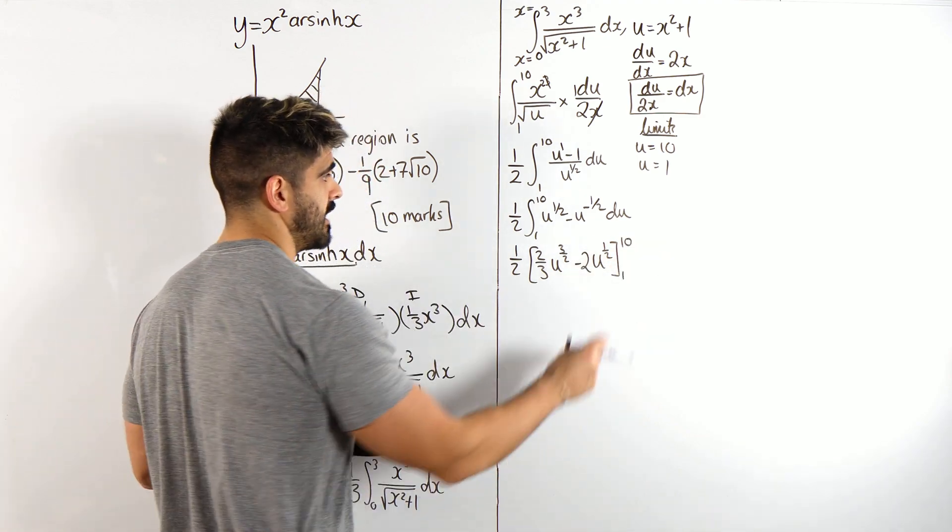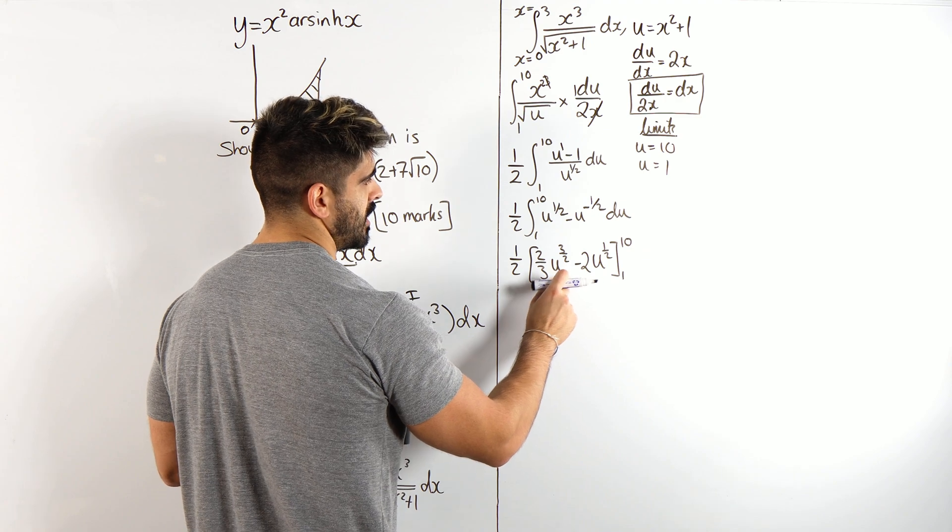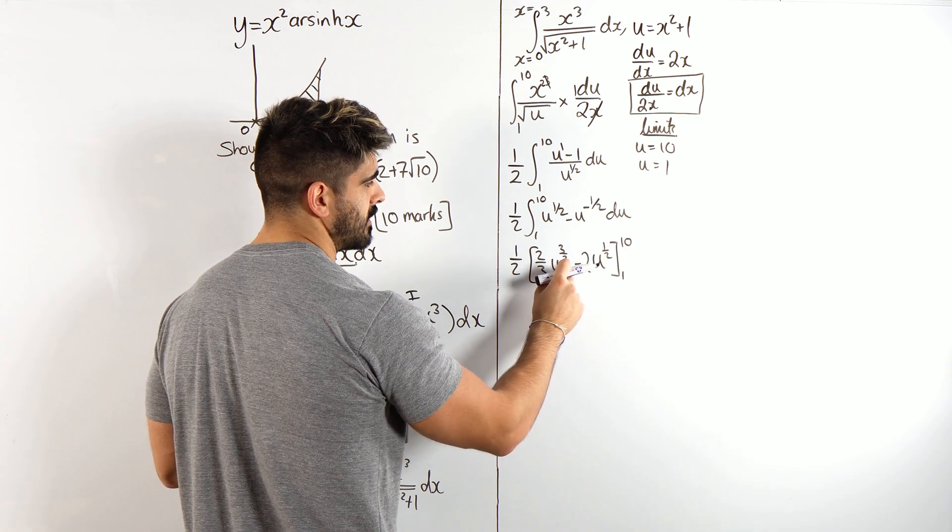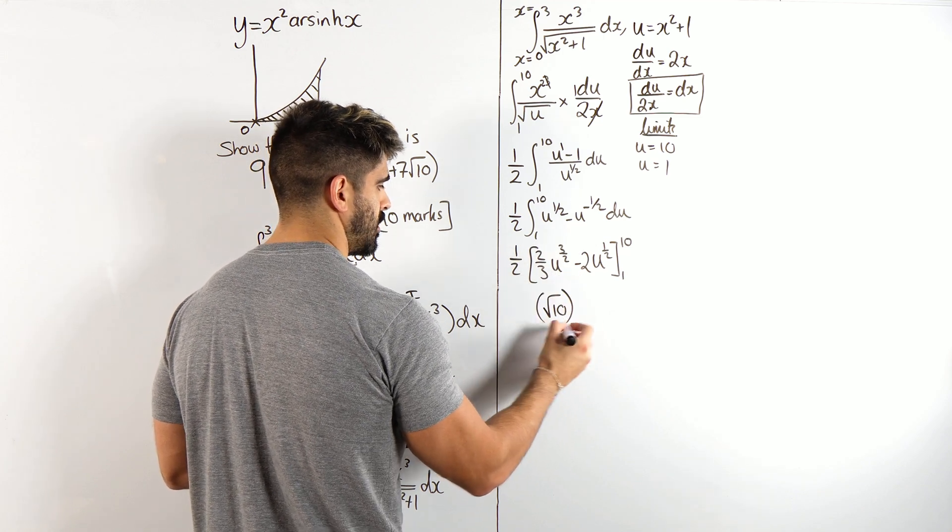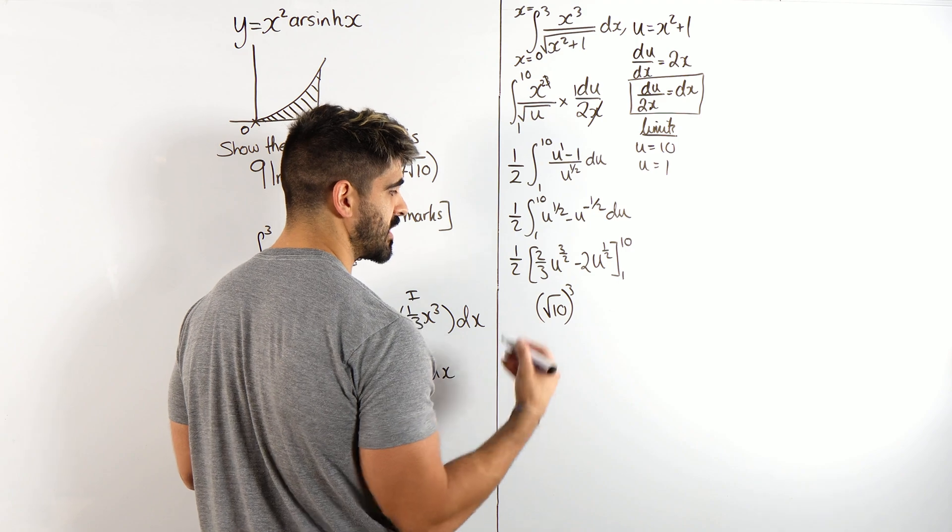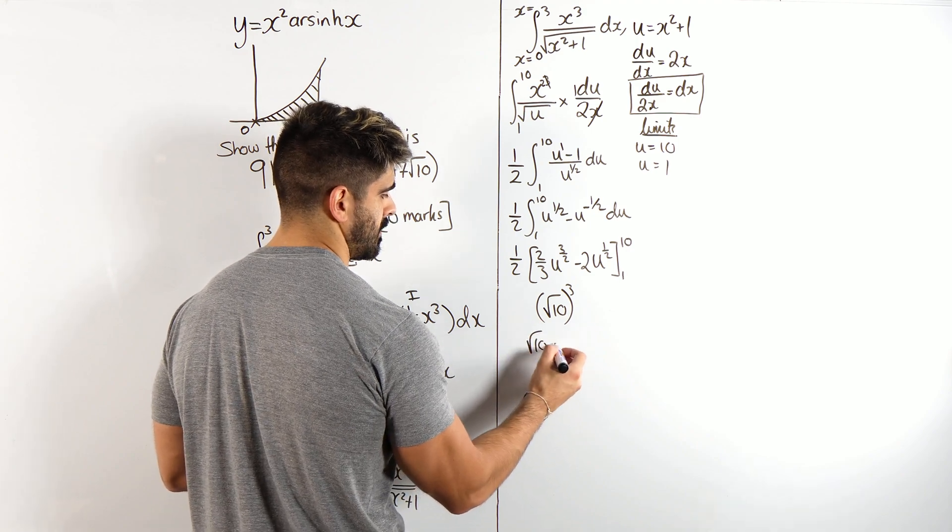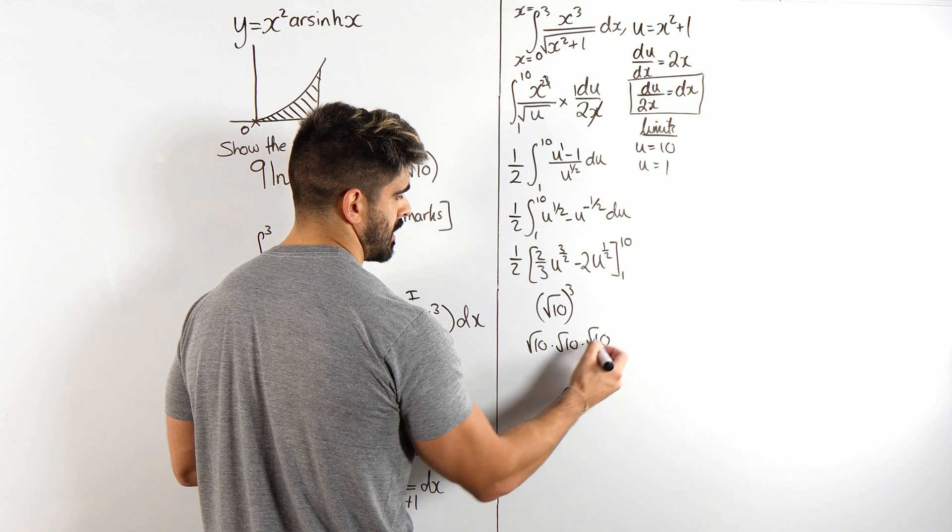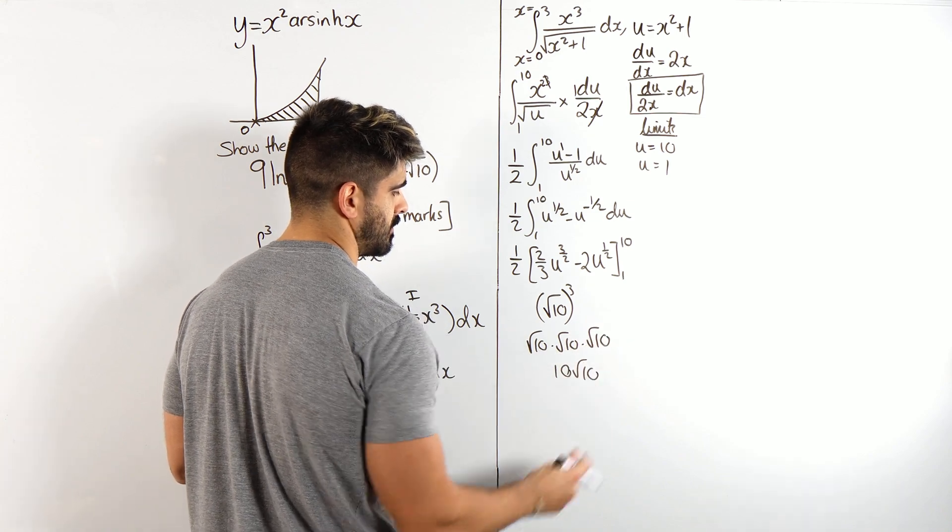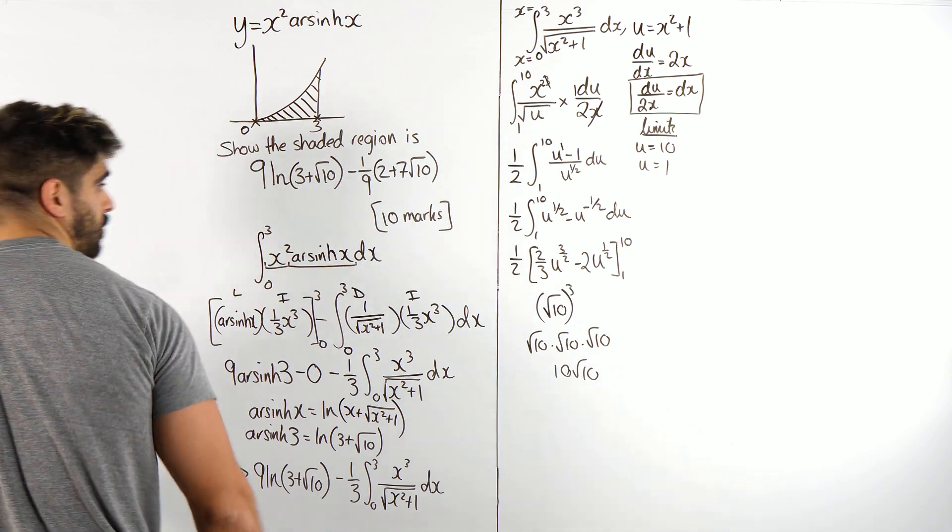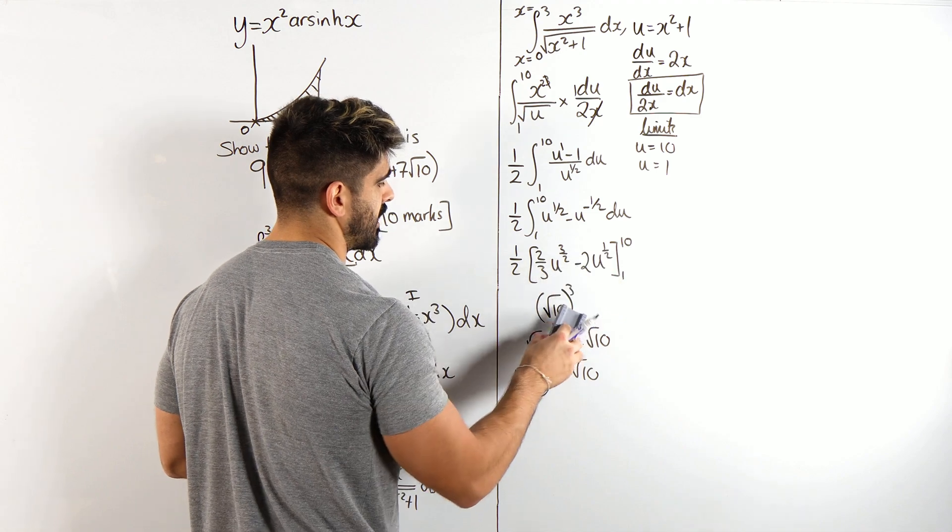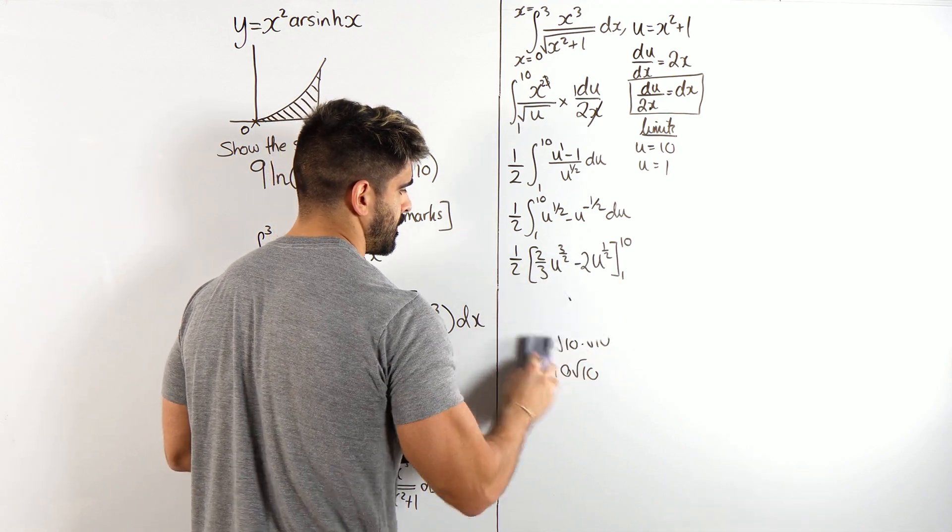Okay, so, subbing in 10 here is a bit AUX, because that 3 over 2 means you root it, then you're cubing it, right? So, this is saying root 10 cubed, which is root 10 times root 10 times root 10, which is 10 root 10, okay? So, that was just me showing you guys how that works, so when I sub in 10 here, I'm going to write 10 root 10, alright.